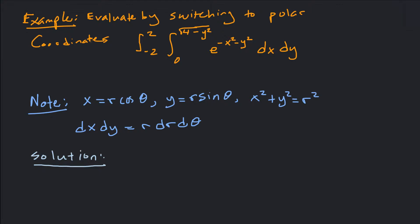Hey guys, what's up? Today we're going to integrate by switching to polar coordinates. We have a double integral here: integral from negative 2 to 2 for y, integral from 0 to square root of 4 minus y squared for x. And then the function we're integrating is e to the negative x squared minus y squared.